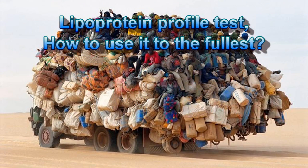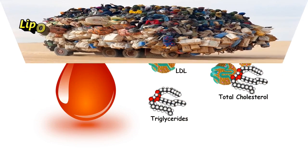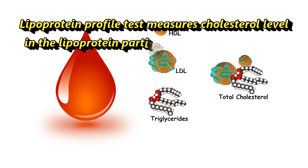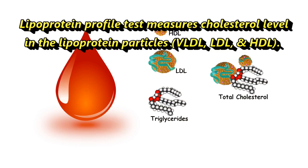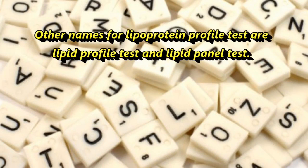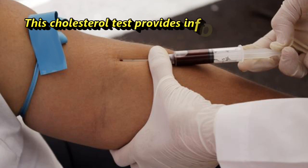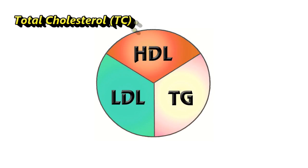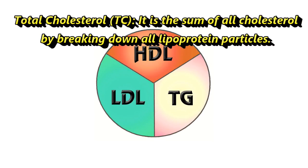Lipoprotein profile test — how to use it to the fullest. The lipoprotein profile test measures cholesterol levels in the lipoprotein particles: VLDL, LDL, and HDL. Other names for this test are lipid profile test and lipid panel test. This cholesterol test provides information about total cholesterol (TC), which is the sum of all cholesterol by breaking down all lipoprotein particles.